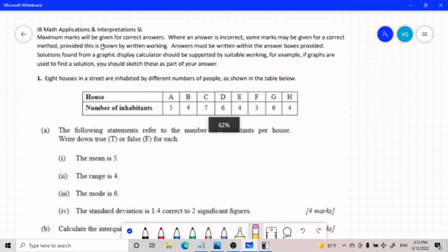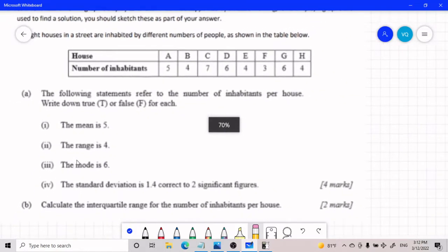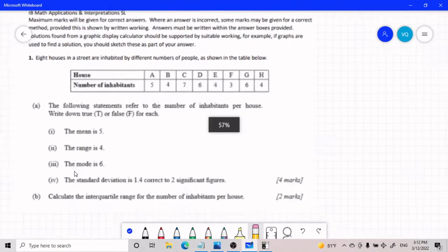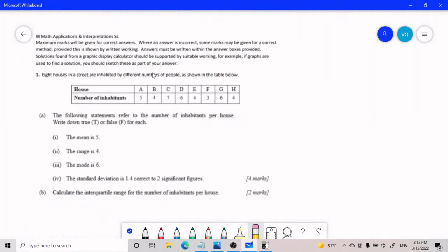For the following statements we need to refer to the number of inhabitants per house, write down true or false for each of these. Now I can show you how to get mean manually, but I want you to get into the habit that anytime you have a table that looks anything like this, just pop it into your calculator, especially because it's going to be helpful down the line with things like standard deviation and interquartile range.